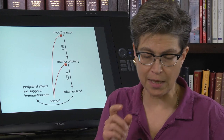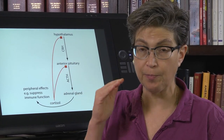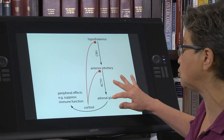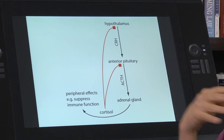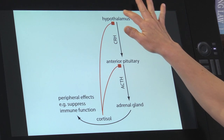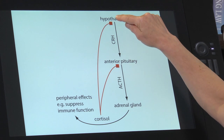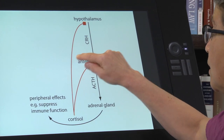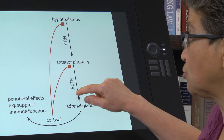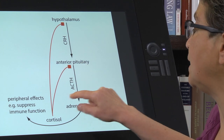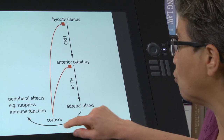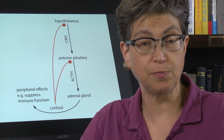One critical take-home message is that you have to understand the HPA axis — the hypothalamo-pituitary-adrenal axis. The hypothalamus releases hormones such as gonadotropin-releasing hormone, growth hormone, and corticotropin-releasing hormone. Corticotropin-releasing hormone acts on the anterior pituitary to elicit ACTH release, which in turn acts on the adrenal gland to release cortisol. It is this release of cortisol that serves as the global response to stress.